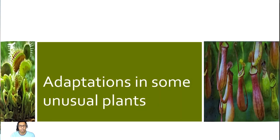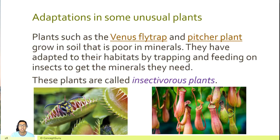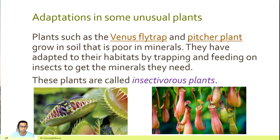Let's see some adaptations in unusual plants. Plants such as the Venus flytrap and the pitcher plant grow in soil that is poor in minerals. They have adapted to their habitats by trapping and feeding on insects to get the minerals they need. These plants are called insectivorous plants.